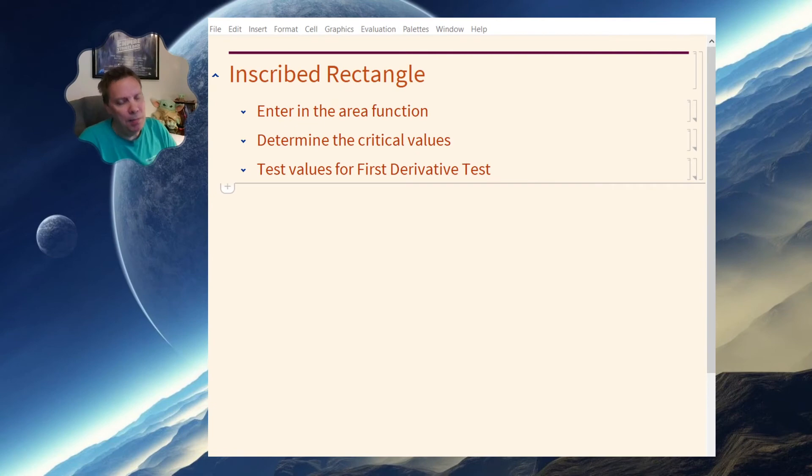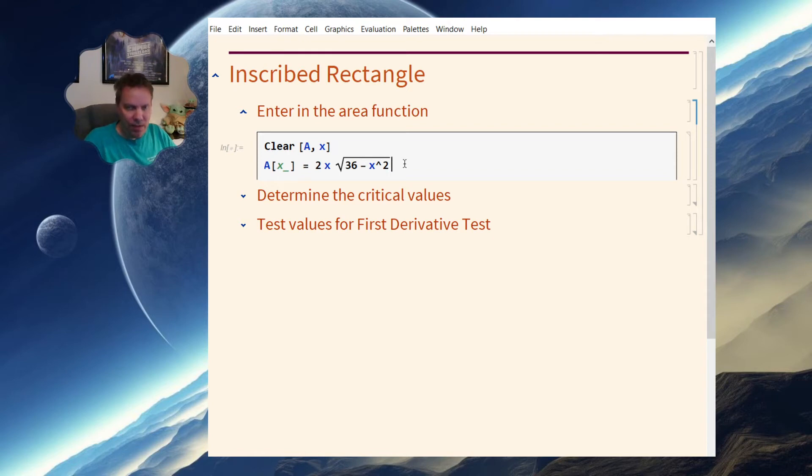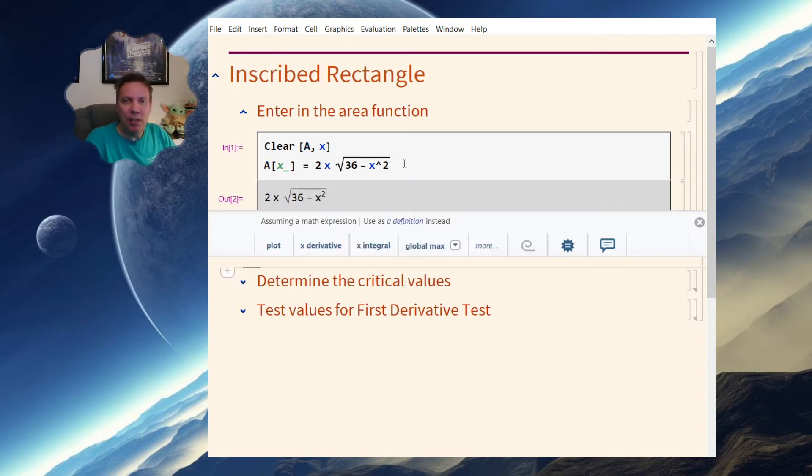So looking at Mathematica, this is the inscribed rectangle problem. The first thing I need to do is enter in the function. So I already did that first. Remember that you should always clear things out. I am going to use A, capital A, for the name of this function. And it is in one variable. We already determined that the area function should be 2x times the square root of 36 minus x squared. So I will enter this in, a shift enter, and I wind up getting an out two.